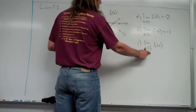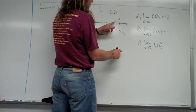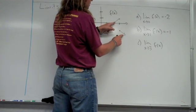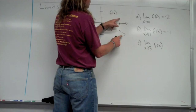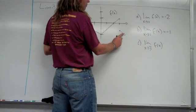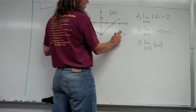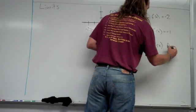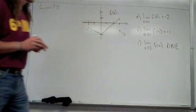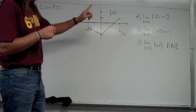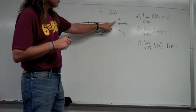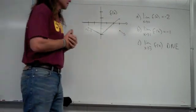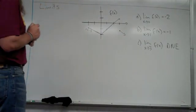For part C, find the limit as x approaches 3. Here the graph does something weird — it splits apart. From the left-hand side, as I approach x equals 3, the y value seems to be approaching 1. From the right-hand side, approaching x equals 3, the y value seems to be negative 1. Since the left-hand limit and the right-hand limit don't agree, the limit does not exist — DNE.